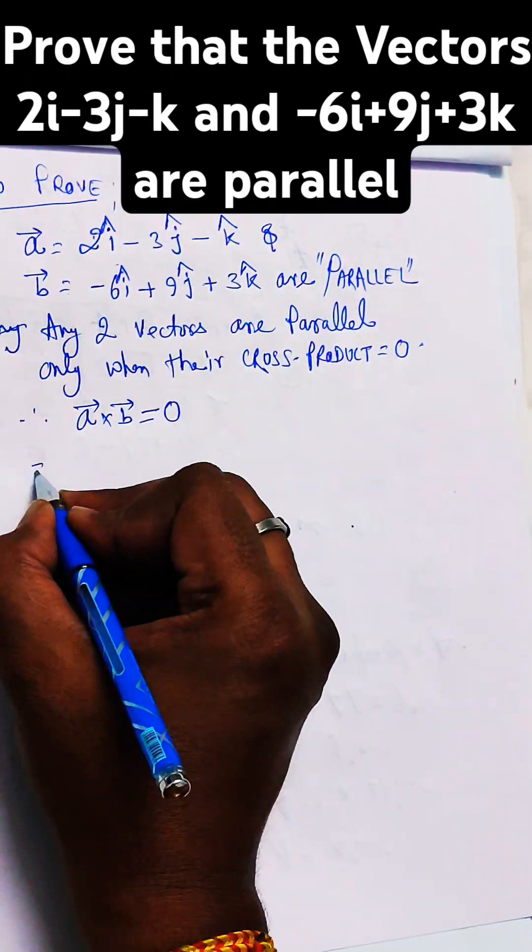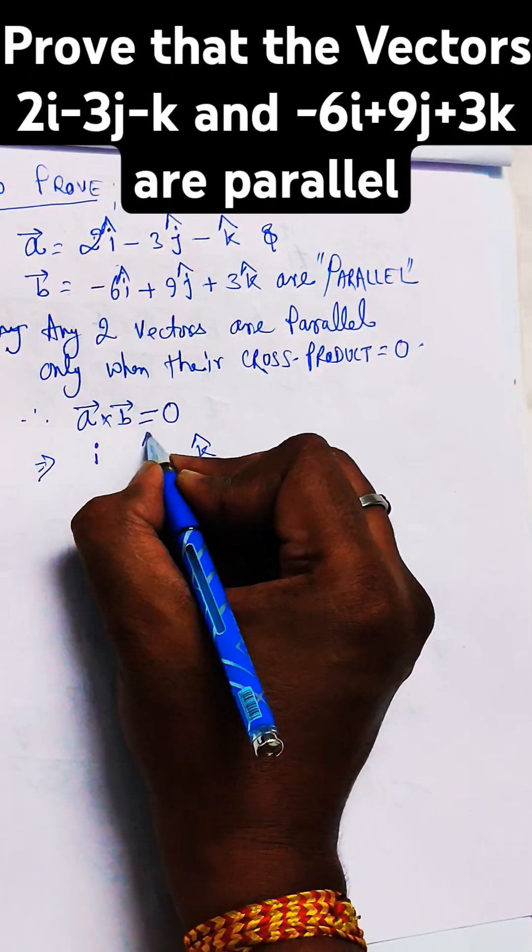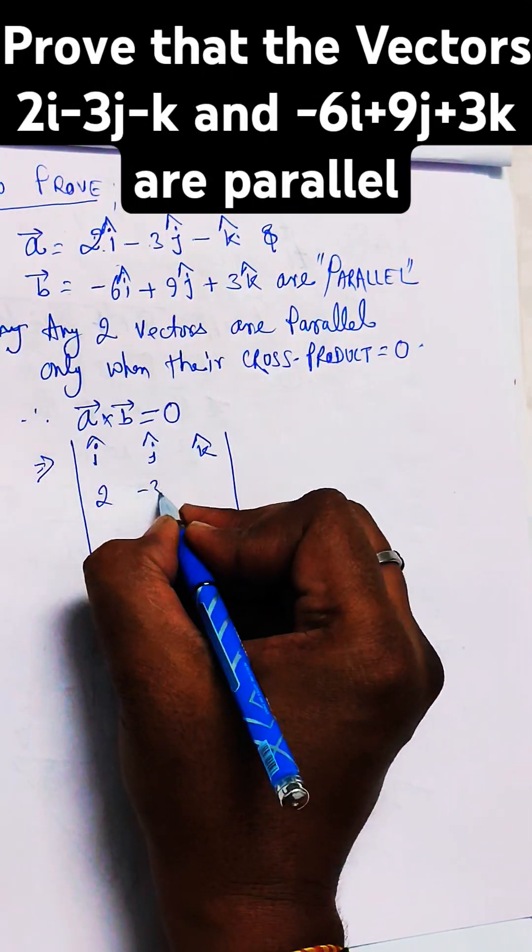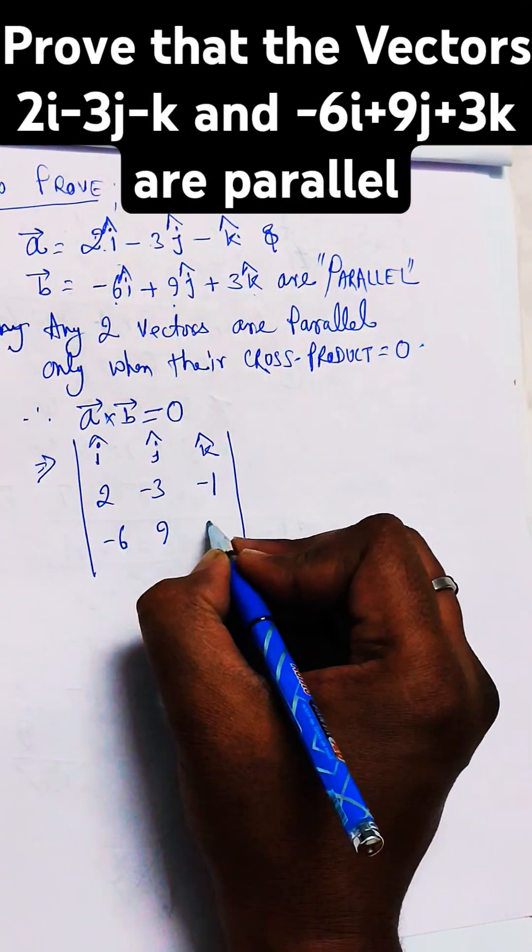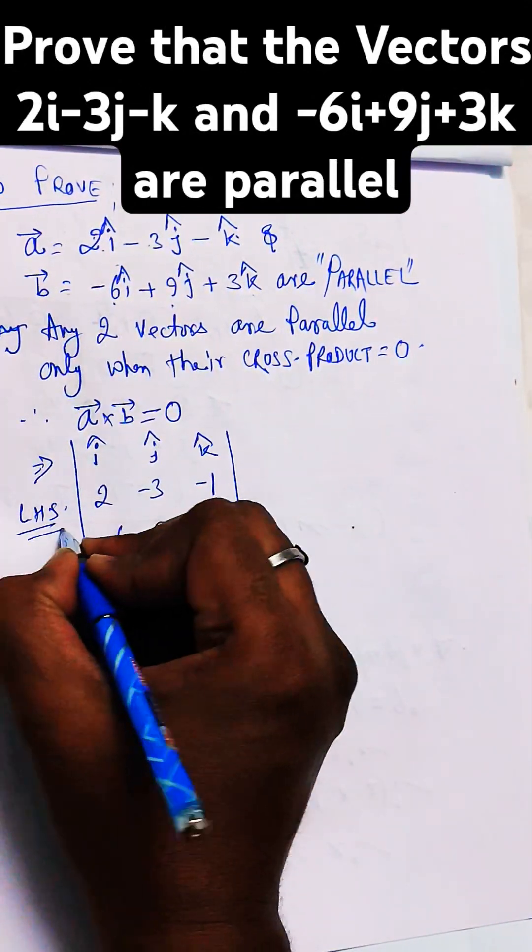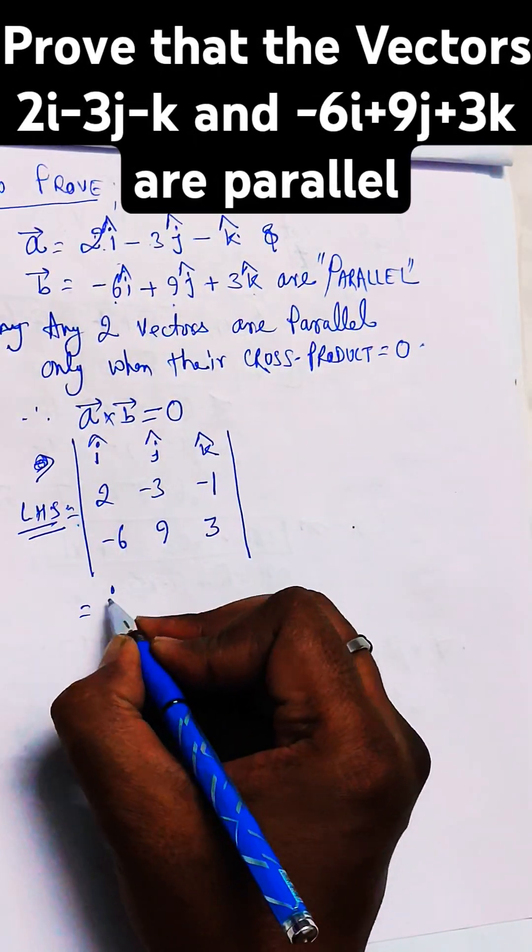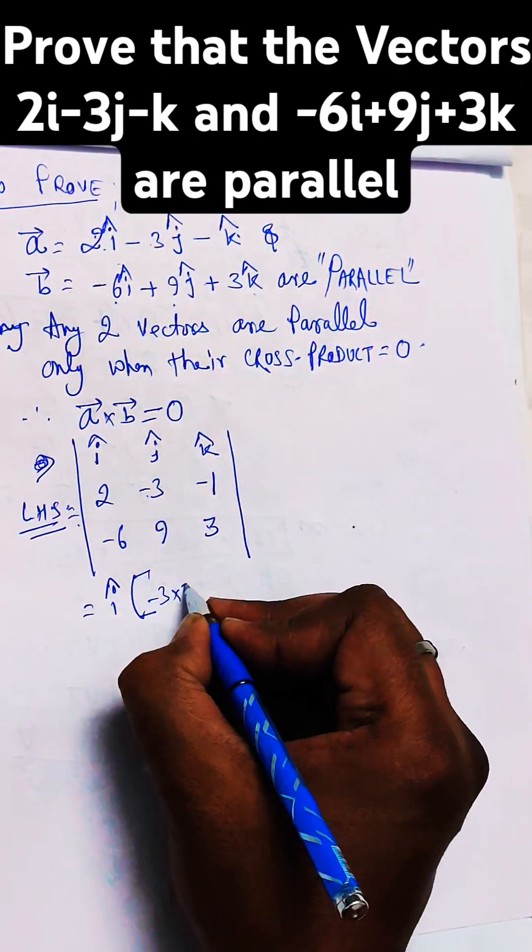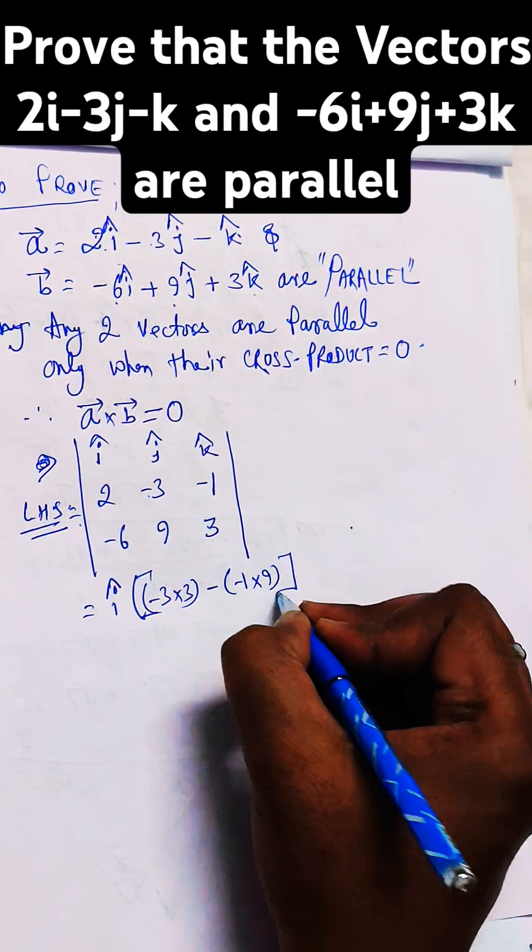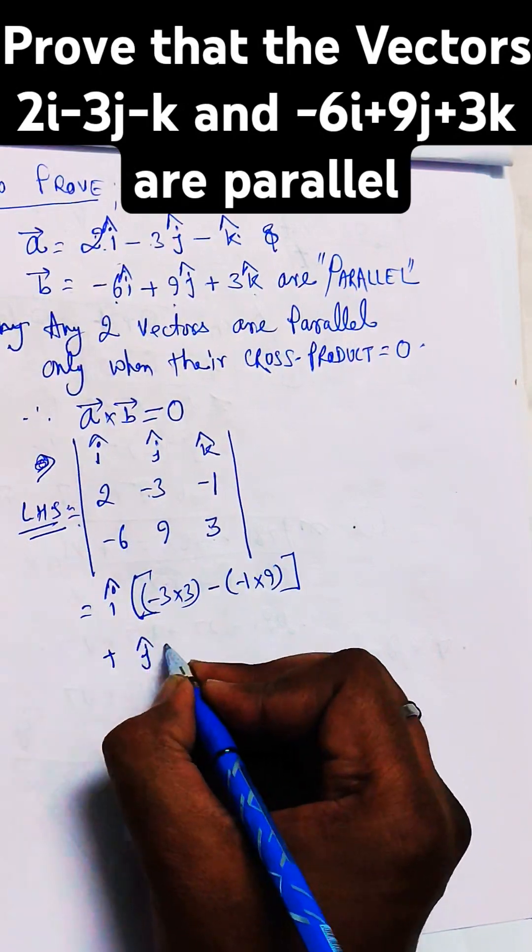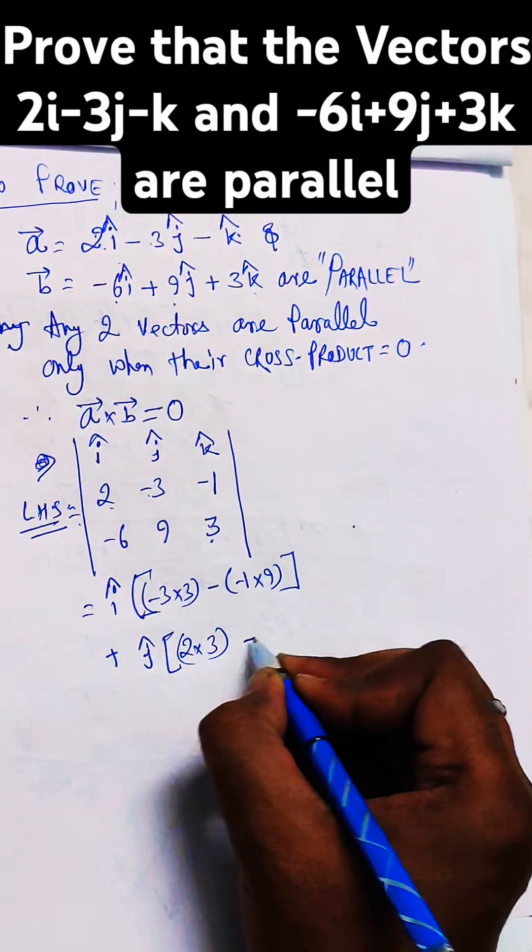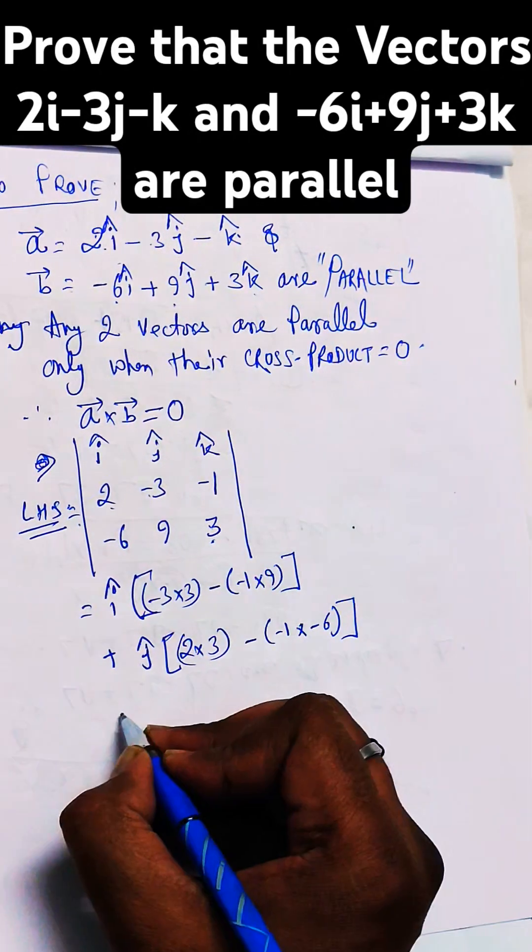Now, A cross B can be calculated by using the determinant format: i, j, k in the first row, and putting the coefficients of i, j, k into the second row for vector A and the coefficients of i, j, k in the last row for vector B in the determinant.